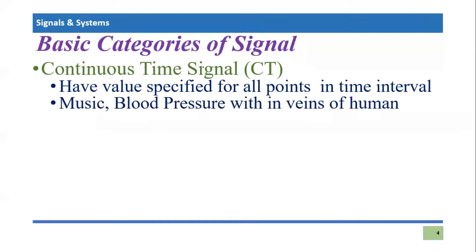For example, music is an example of a continuous time signal because the duration for which a music signal lasts will be continuous. You can't say there is a gap between two samples because there will always be some intensity variations available for very minute durations. For example, I'm speaking through this microphone, so my vocal signals are continuous signals. If my speaking lasts for two minutes, then for every millisecond or nanosecond of those two minutes, my vocal signals will be present. This is the nature of continuous time signals — they are defined for every point within the time interval.